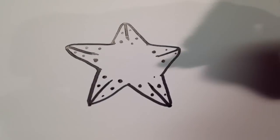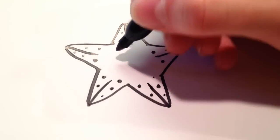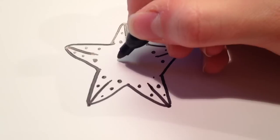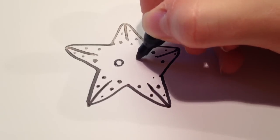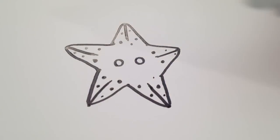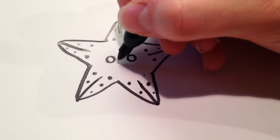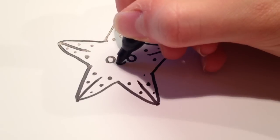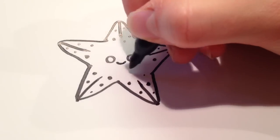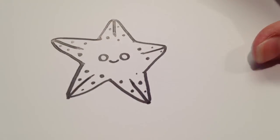And then for the face I'm going to draw a really cute face which of course starfishes probably do not have faces. I'm going to draw two circles right next to each other. And then a cute little smile not very far down, kind of between the eyes there.